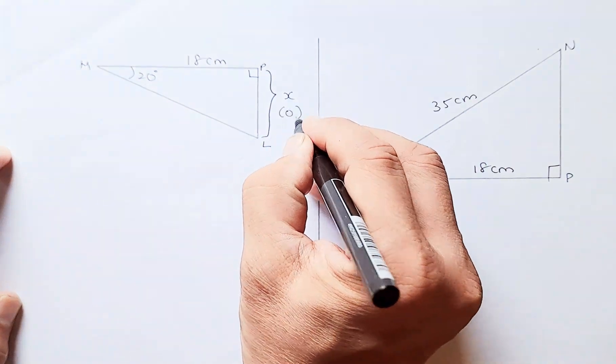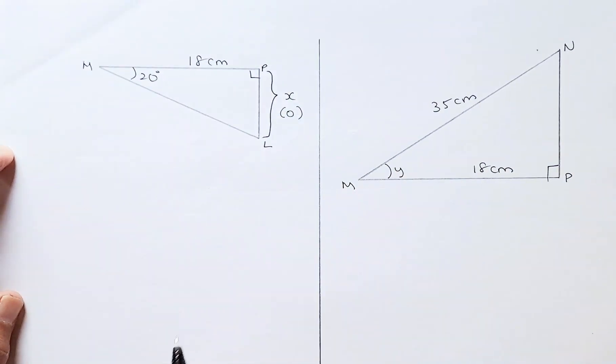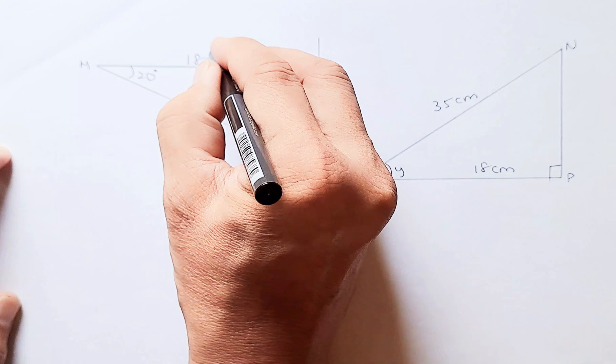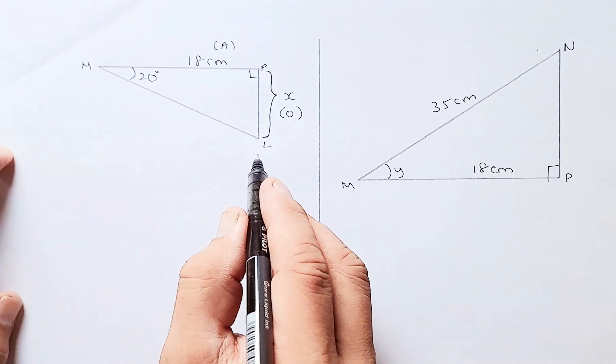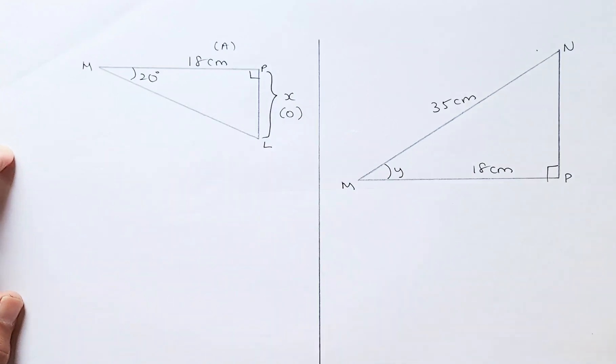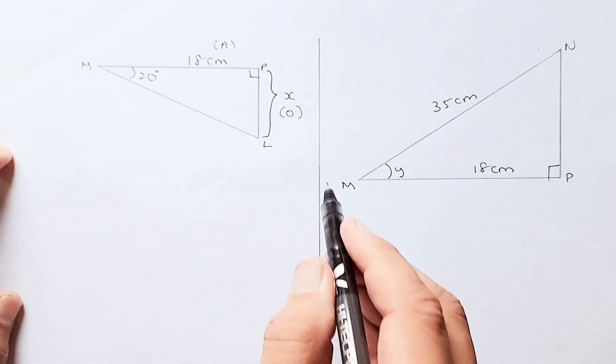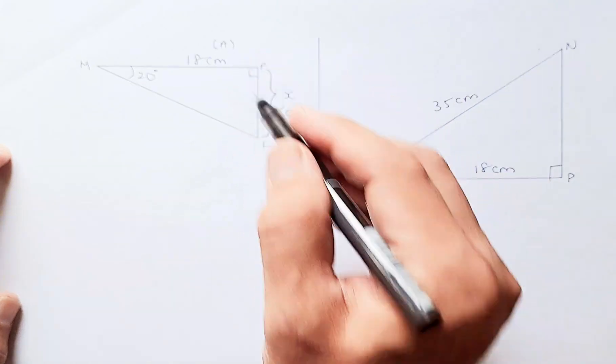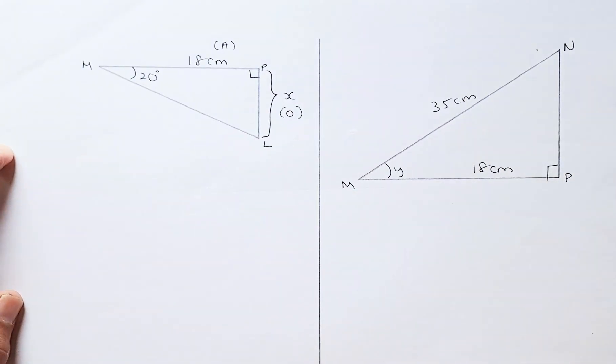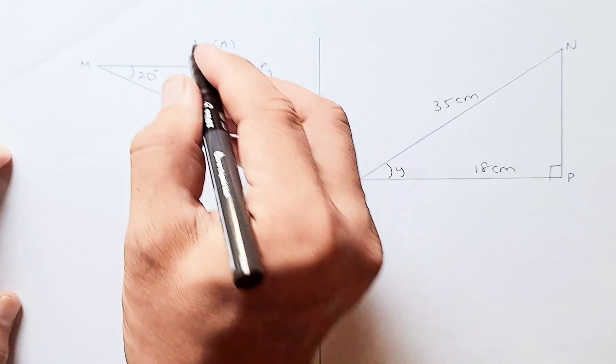you need to label the sides. So this is the angle, so X has to be the opposite, it's opposite the 20 degrees, and then 18 is called the adjacent because it's next to the angle, and ML is the hypotenuse because it's opposite to 90 degrees. But because there's no numbers on ML, we ignore ML. So we have O and A, so we should use TOA.